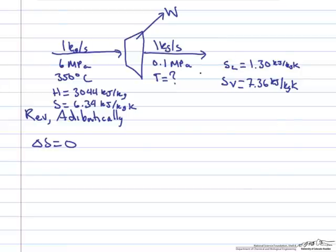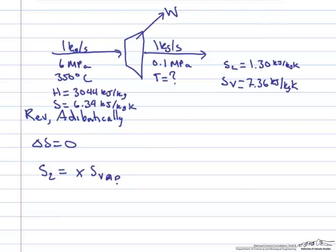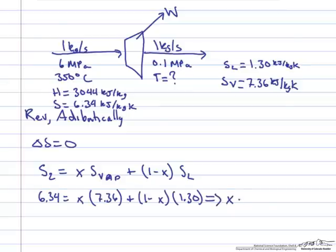We find the quality of the steam where the entropy equals 6.34 using the lever rule: S2 = x times S_V plus (1 minus x) times S_L, where x is the vapor fraction. Setting S2 equal to S1 and solving, we find x equals 0.83. So at the outlet we have 83% saturated vapor and 17% saturated liquid, both at 0.1 MPa.